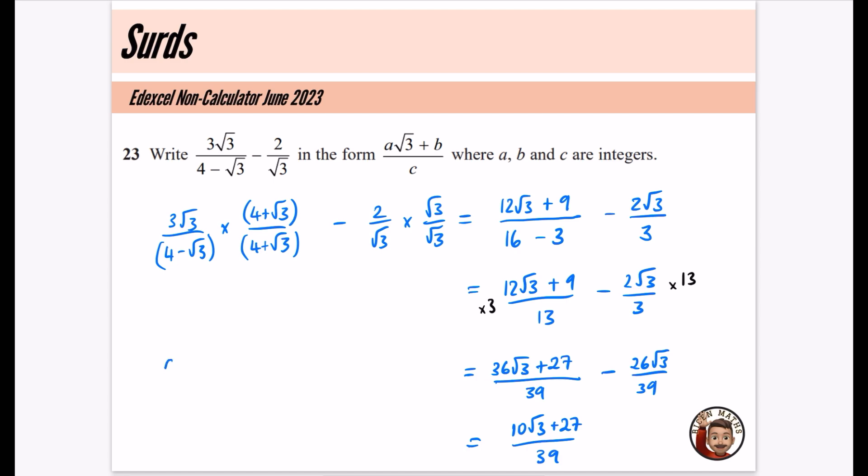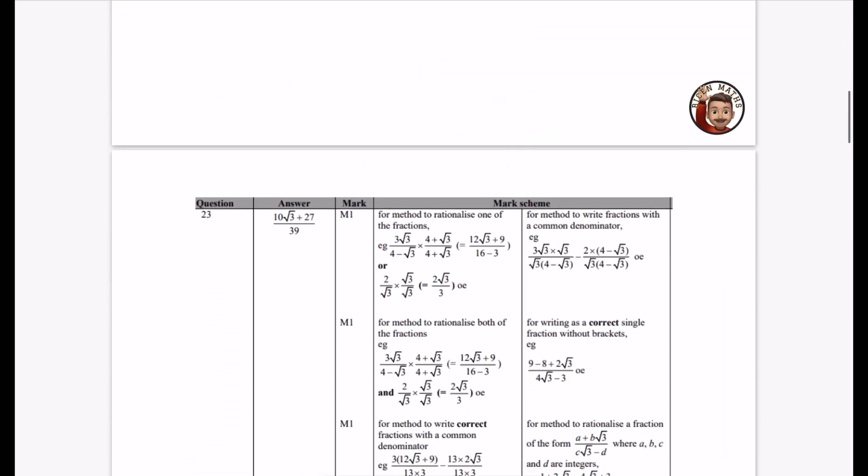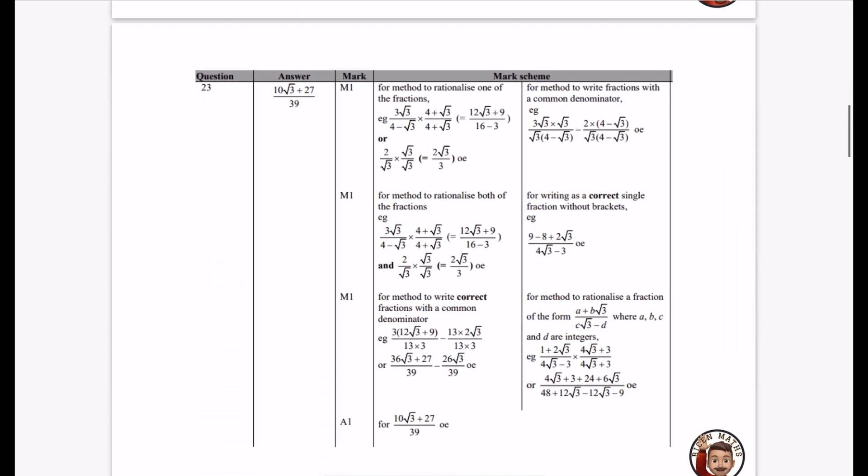Now we don't have to write down what a, b, and c are, but it's worth noting that a in this case is 10, b in this case is 27, and c is 39. Let's double check if we've got this right. So I've got my spare page there. And this is the mark scheme for this question. We have the 10√3 + 27 over 39.